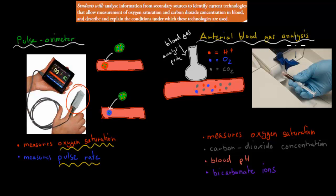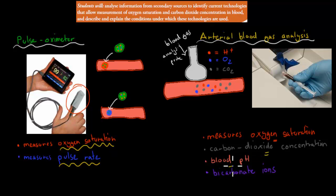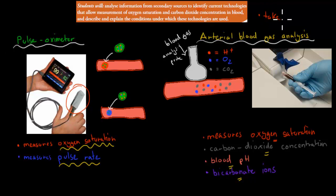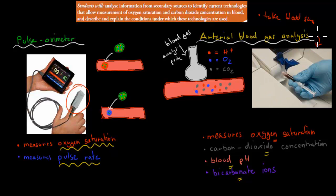The other technology is arterial blood gas analysis. It measures oxygen saturation, the same as the pulse oximeter, but on top of that it also measures carbon dioxide concentrations, blood pH, and bicarbonate ions. How this works is you actually have to take a patient's blood — you take a blood sample — and then you put it into one of these machines. This is a blood gas analysis machine.